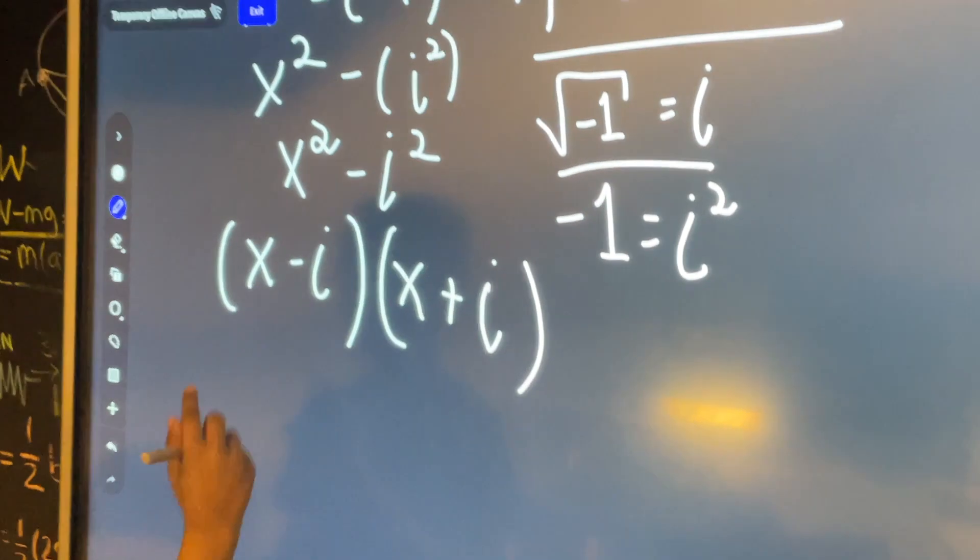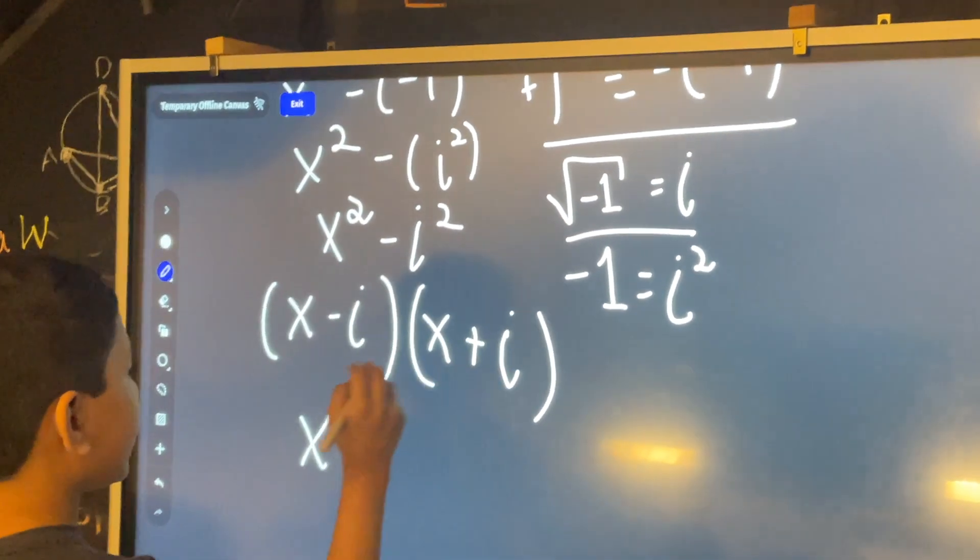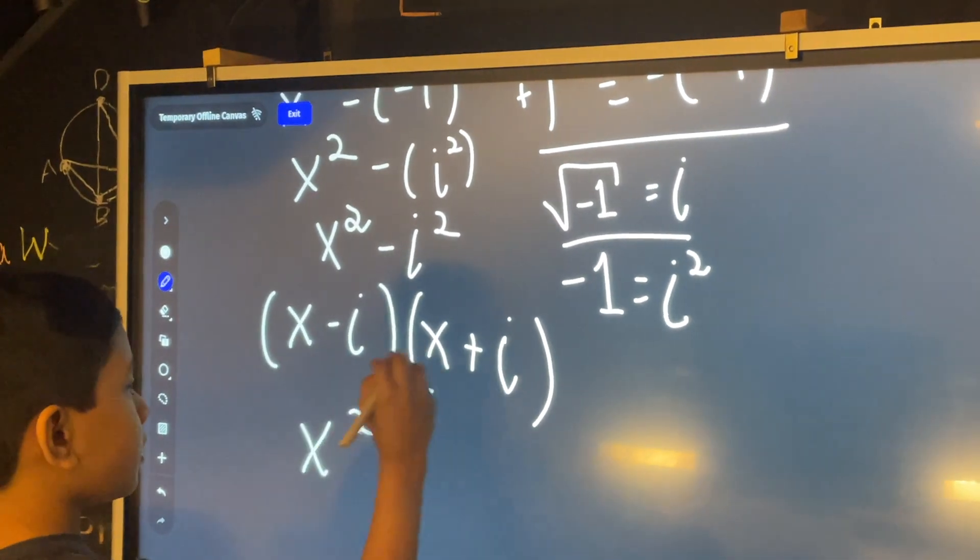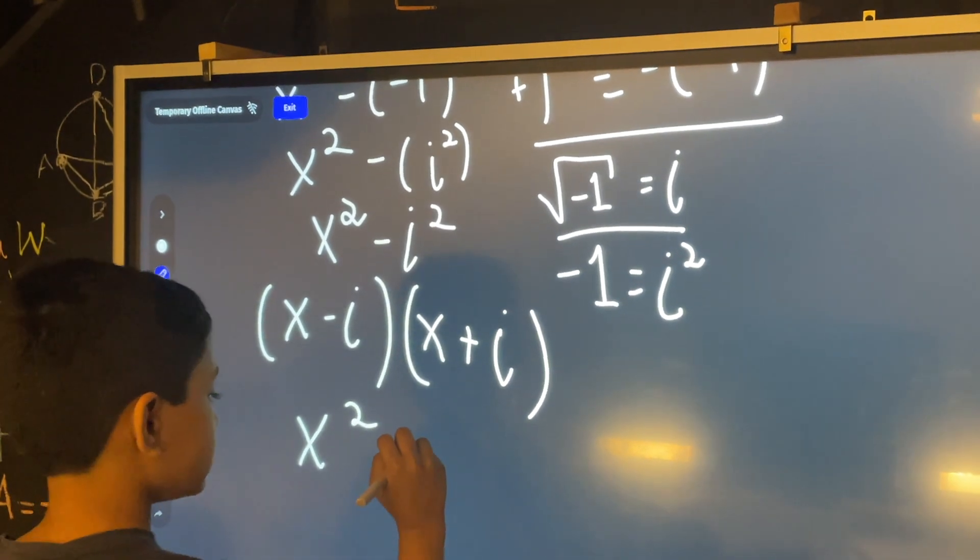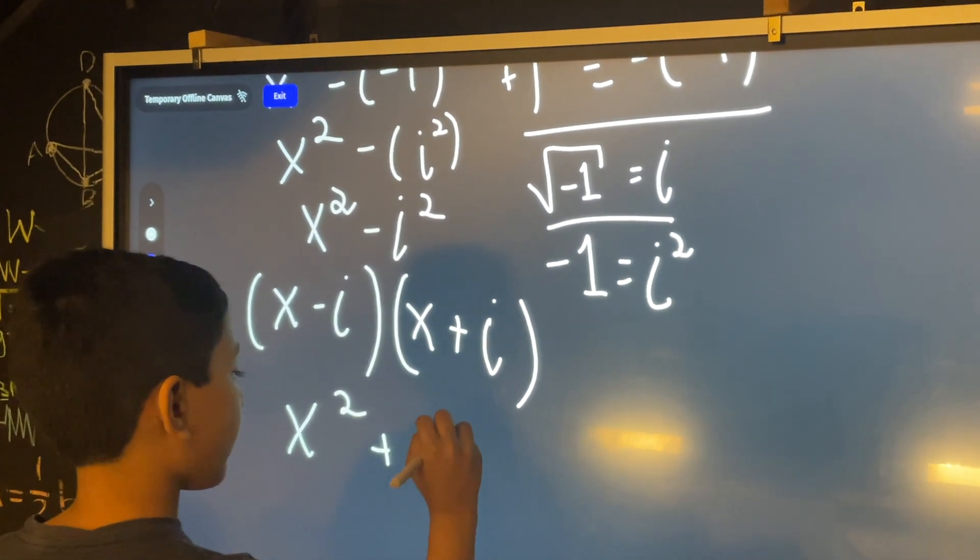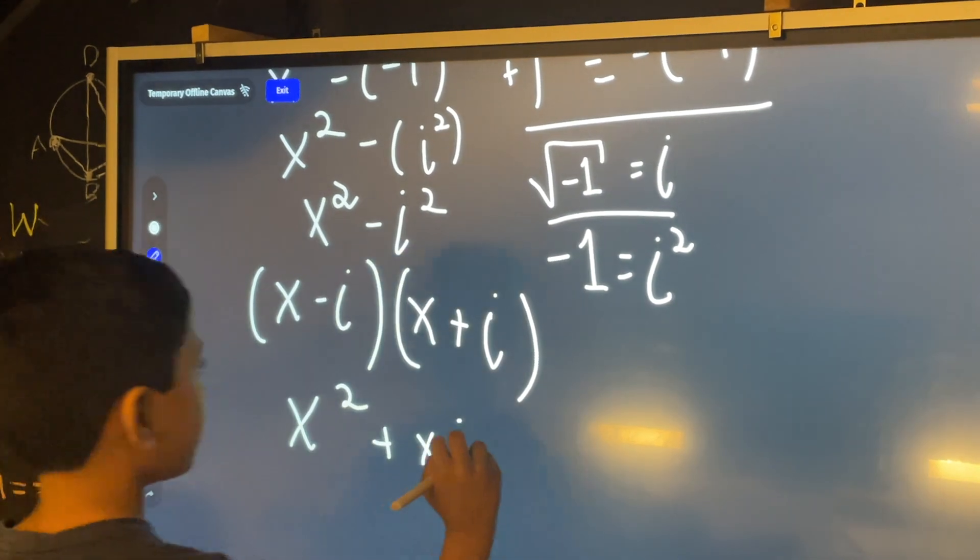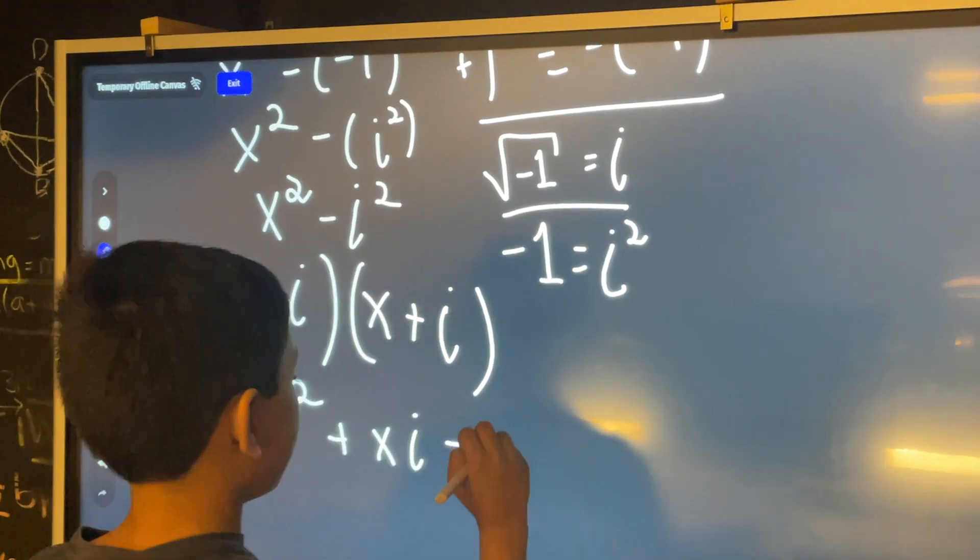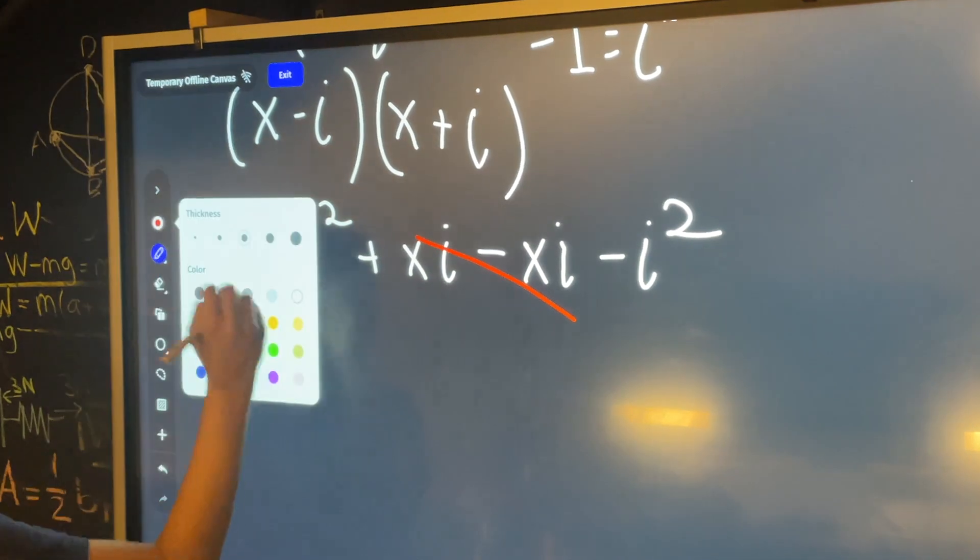And if you distribute it, it also works out. x times x is x squared plus x times imaginary number i minus i times x. It works in our favor.